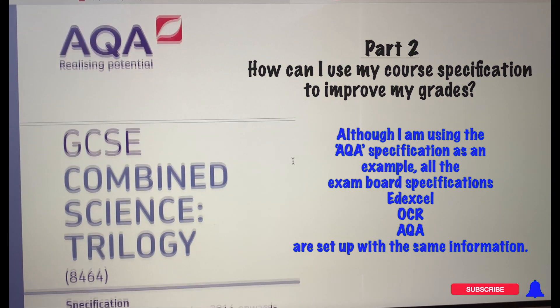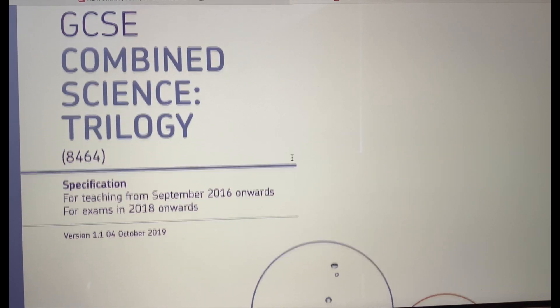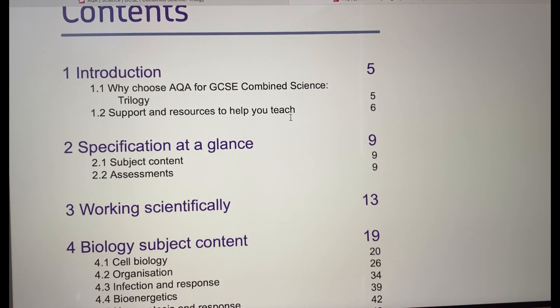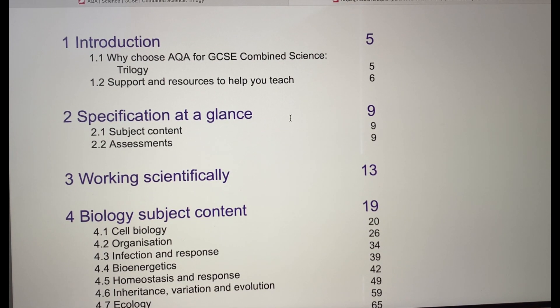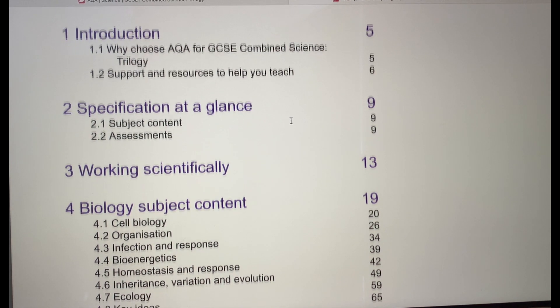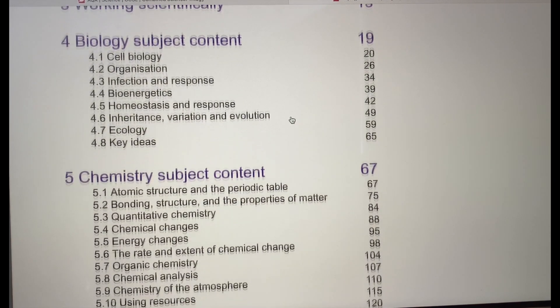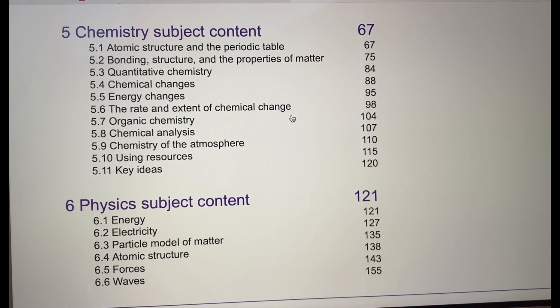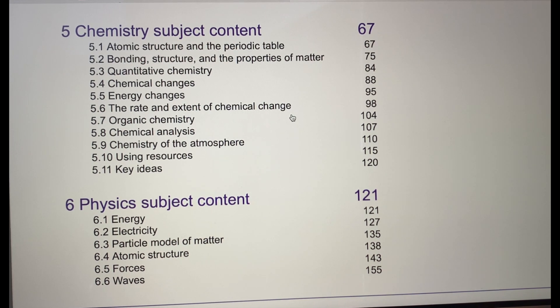Once you have the right specification, if you scroll down to the first page — the contents page — you will see all the basic information. There will be some kind of introduction, the specification at a glance, and then information on the content of the biology, chemistry, and physics parts of your course. If you're doing the separate sciences, this would just be for chemistry, biology, or physics individually.